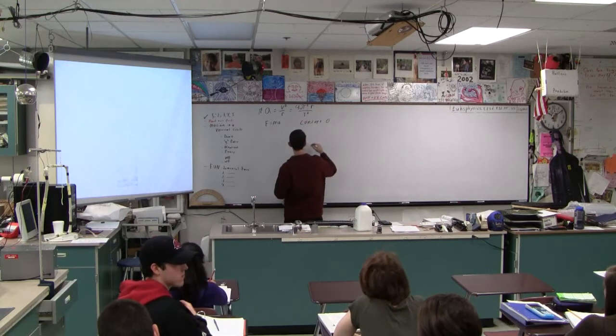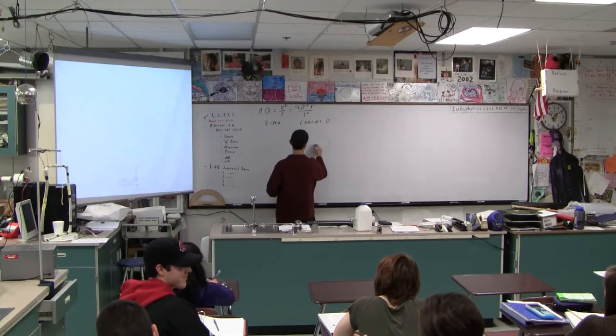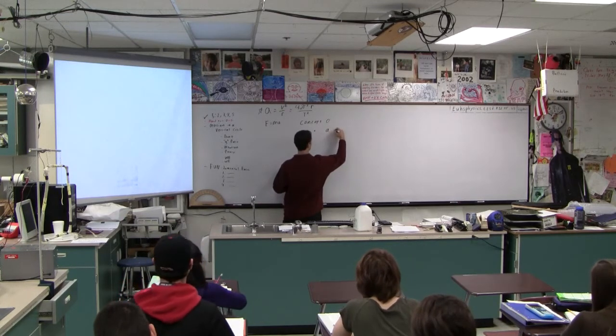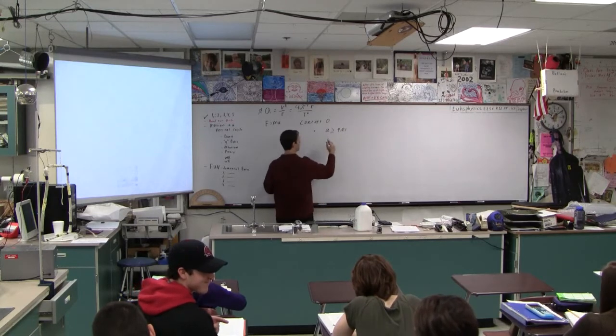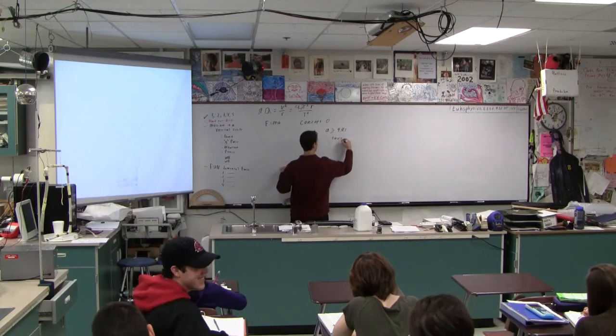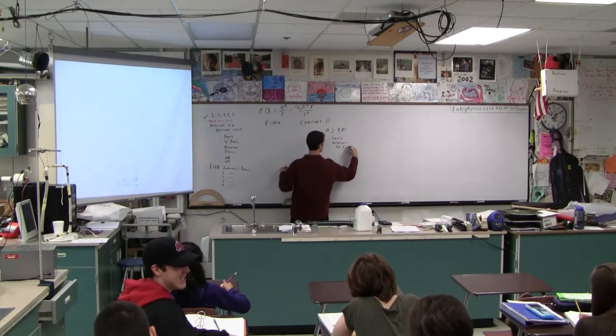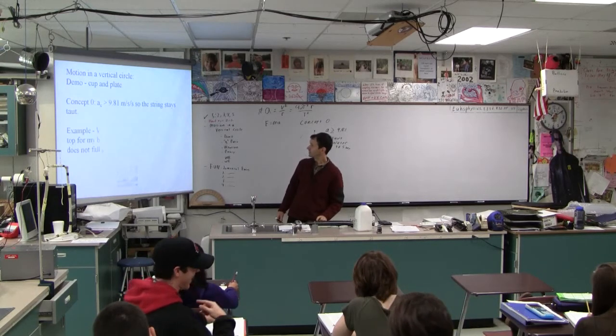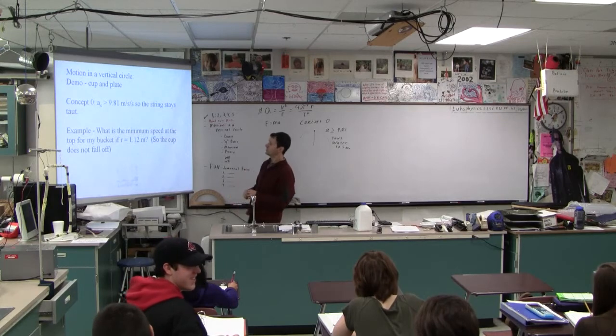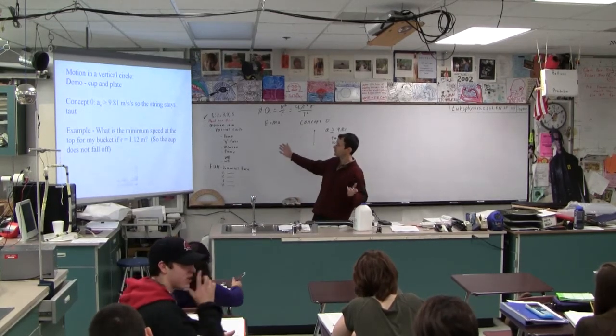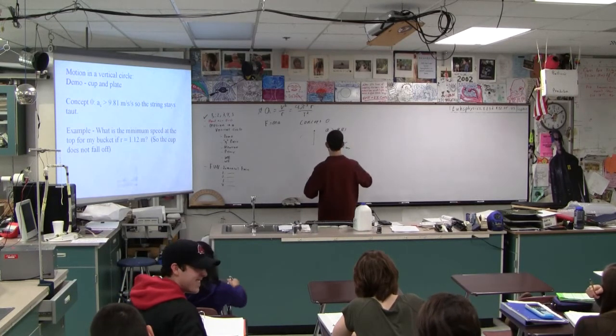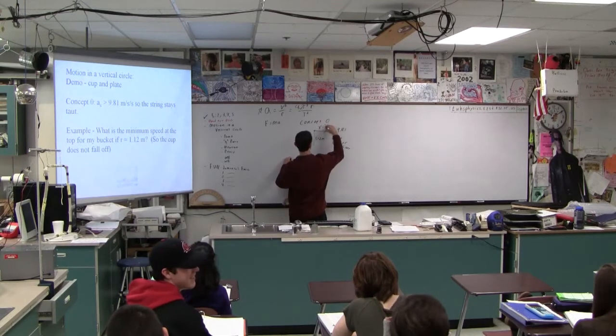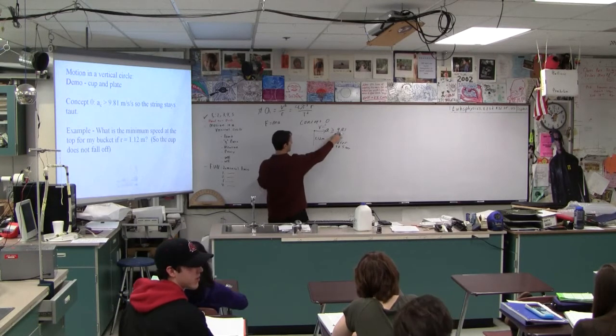Concept zero is that if you're going to go in a circle, at the top the acceleration needs to be greater than or equal to 9.81 for the string to stay taut, for the water to stay in the bucket, et cetera. So that's concept zero, and there's a whole genre of problems like this. And this example here is: what is the minimum speed at the top for my bucket if the radius is 1.12 meters? So the cup doesn't fall out. This is 1.12 meters. What is my minimum speed?